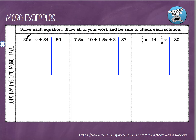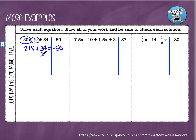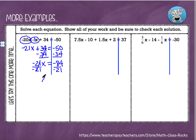Again, I'm looking for like terms. I've got a negative 20x and I've got a negative x. I remember that this negative x is really a negative one, even though we don't write that one. So negative 20 plus negative one is negative 21x. I'm going to bring down that plus 34, and that equals negative 50. I'm going to solve this two-step equation. My first step is to subtract 34 from each side. This is going to cancel. On the left, I'm left with negative 21x. On the right, negative 50 minus 34 is the same as negative 50 plus negative 34, which is negative 84. Then I'm going to divide each side by negative 21, and that tells me x equals positive 4.